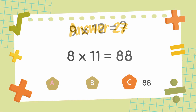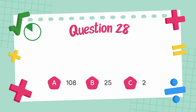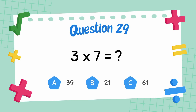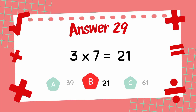What is 9 multiply 12? The answer is 108. What is 3 multiply 7? The answer is 21.